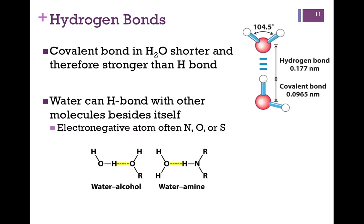Water can also hydrogen bond with other molecules besides itself. All you need is an electronegative atom. Often, it's nitrogen, oxygen, or sulfur in biological systems. So, in the figure on the bottom of the screen here, we have water hydrogen bonding with an alcohol. On the right, we have water hydrogen bonding with an amine. In each case, the covalent bond is the solid line. The hydrogen bond is the dashed line highlighted in yellow.